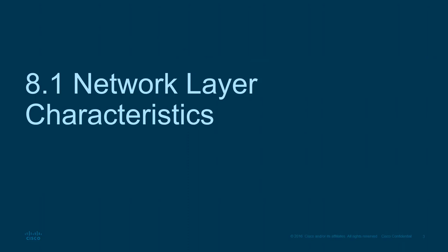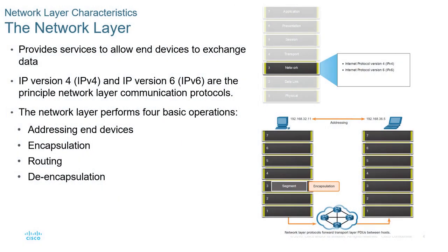What are some of the basic characteristics of the network layer? This is where we take a segment from layer 4 and encapsulate it into a packet. The four major areas the network layer performs are: addressing for source and destination — the destination being an external address outside of our LAN — encapsulation and decapsulation, and lastly routing, which is path selection or path determination from our source to our destination outside of our LAN.